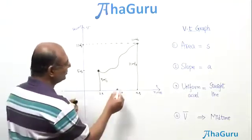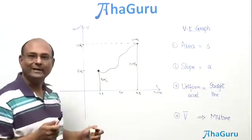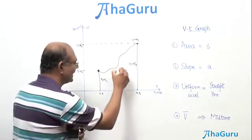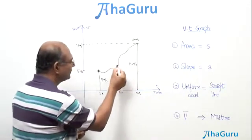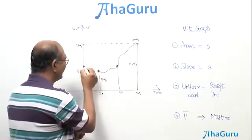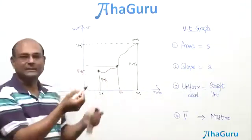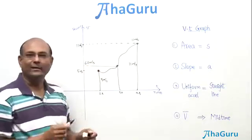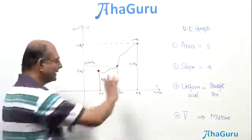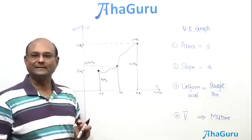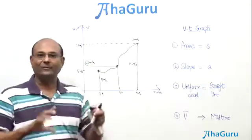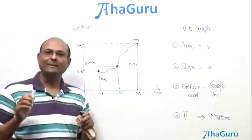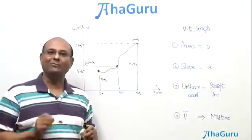Suppose I ask you what was the velocity at 3 seconds. All you do is look at 3 seconds on the time axis, draw a vertical line up to the graph, and read off that point. Maybe that value is 6.2 meters per second. So 6.2 m/s would be the velocity. The height of the graph at that point represents the velocity.